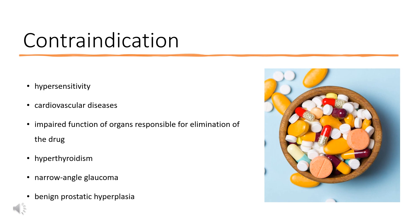Contraindications to Pseudoephedrine use are: hypersensitivity to the drug, cardiovascular diseases, hypertension and coronary artery disease, impaired function of organs responsible for elimination of the drug, severe liver dysfunction, moderate or severe renal dysfunction, hyperthyroidism, narrow-angle glaucoma, benign prostatic hyperplasia, diabetes mellitus, mental agitation, and treatment with monoamine oxidase inhibitors (MAO inhibitors) currently or in the last two weeks.